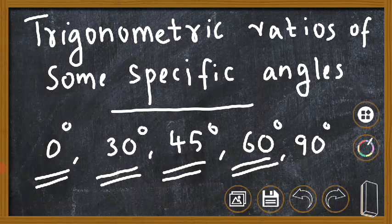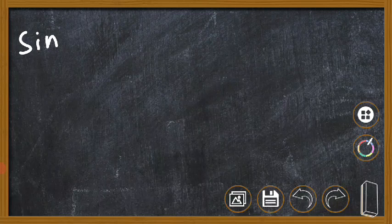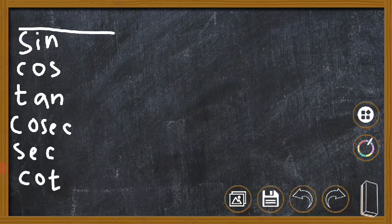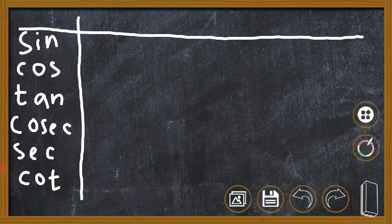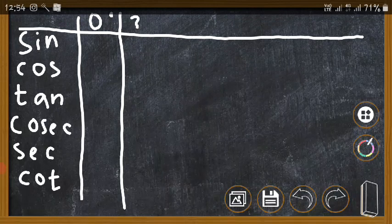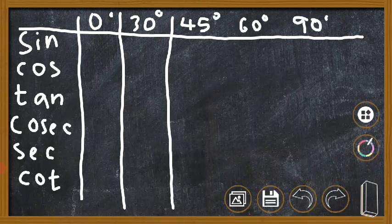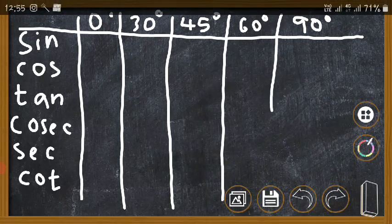There is a table you should study. To start the table, first write down the six trigonometric ratios: sin, cos, tan, cosec, sec, and cot. Then write the five specific angles: 0 degree, 30 degree, 45 degree, 60 degree, and 90 degree. This is the table you should study.